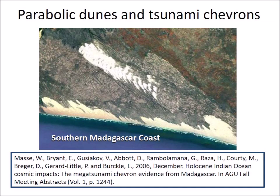Parabolic dunes, or chevron dunes, can be found along the coasts of many land masses. Chevron dunes are formed when a large wave, like a tsunami, scours shallow banks along the shore and carries sand inland. The characteristic parabolic dunes are deposited when the rushing water loaded with debris stops and then retreats back toward the sea.